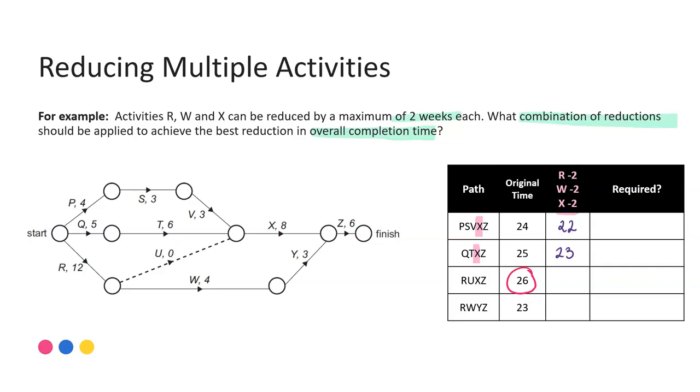For the third pathway I have an R and I have an X. So I have two activities which both can be reduced by two. That means a total of four weeks can be saved. So here 26 minus 4 would bring that completion time down to 22. And then finally the fourth path I have an R and a W, so again two activities can be reduced by two weeks each. So a total of four weeks off the original bringing that time now down to 19. So we've applied all of the possible reductions that were made available to us. And that's the important step when you're reducing multiple activities.